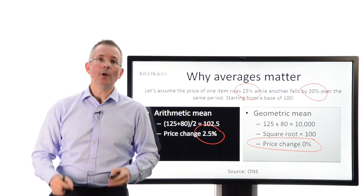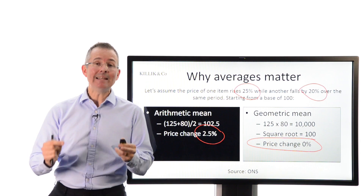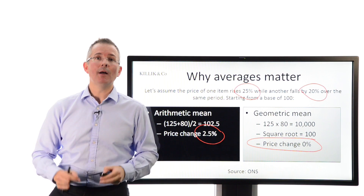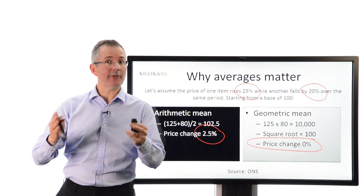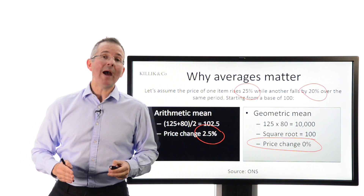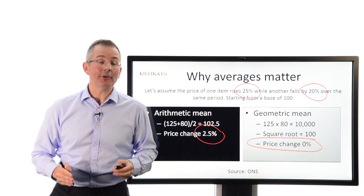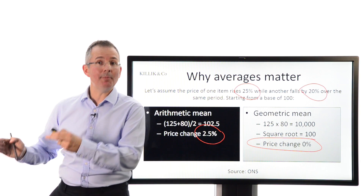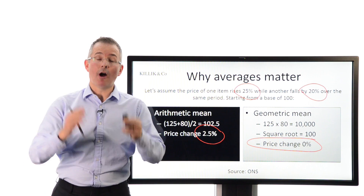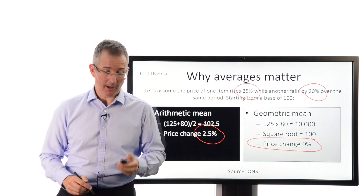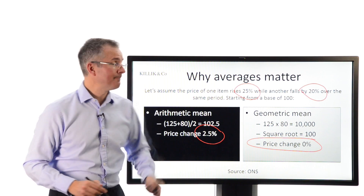The net result is that the CPI tends to be a lower number than the RPI, which does upset people if their wage settlements are linked to the CPI rather than the RPI — for obvious reasons.